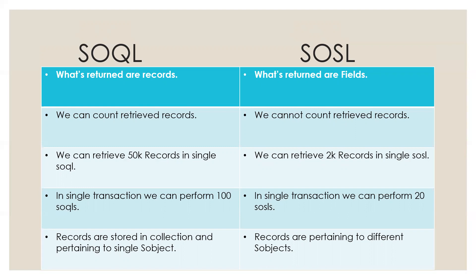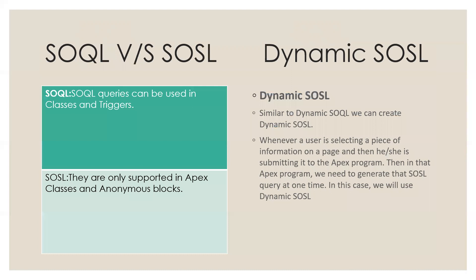Records are stored in a collection pertaining to a single object in Sokol, while in Soso, records are pertaining to different S-objects. Sokol queries can be used in classes and triggers. Soso queries are not supported in Apex classes and anonymous blocks.